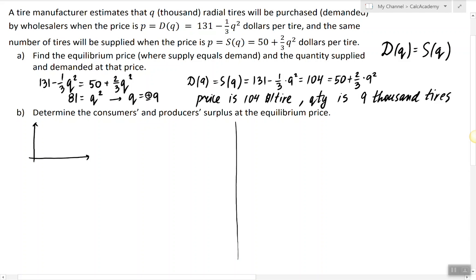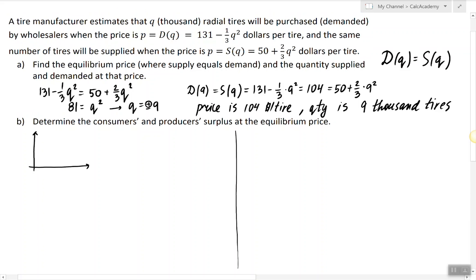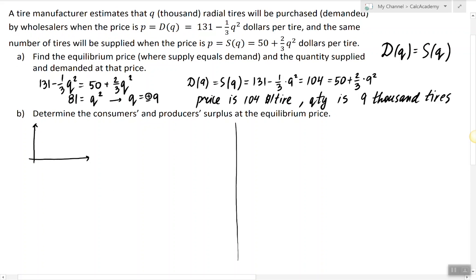To find the consumer surplus we are going to consider the demand curve. The demand curve looks like this. It's a decreasing curve. And the consumer surplus is this area. So this is demand.